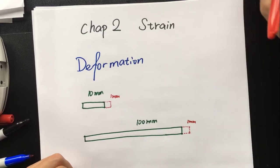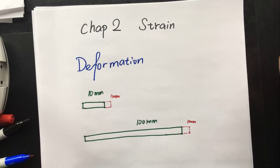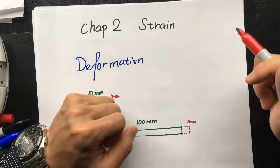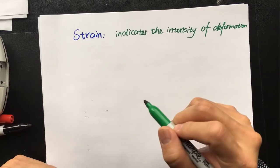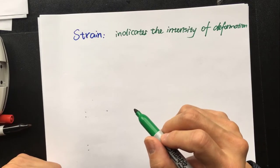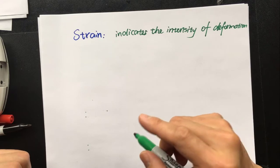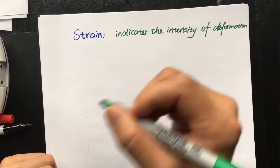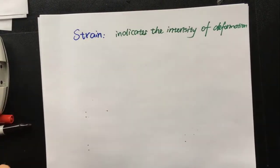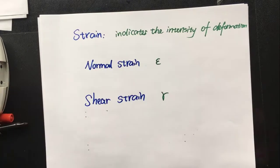Therefore, we introduce the concept of strain to indicate the intensity of deformation. Strain indicates the intensity of deformation — it's very similar to the concept of stress, which we use to indicate the intensity of force. Similarly, we have two types of strain: normal strain and shear strain. Let's look at normal strain first.